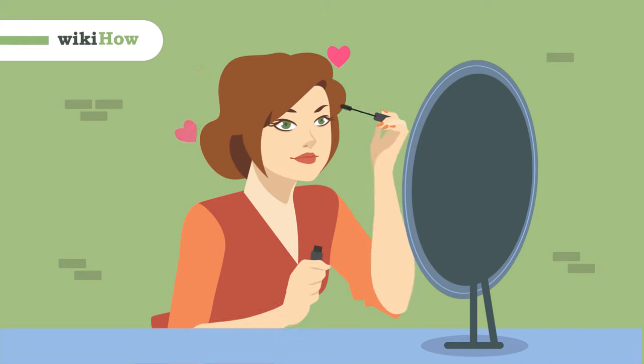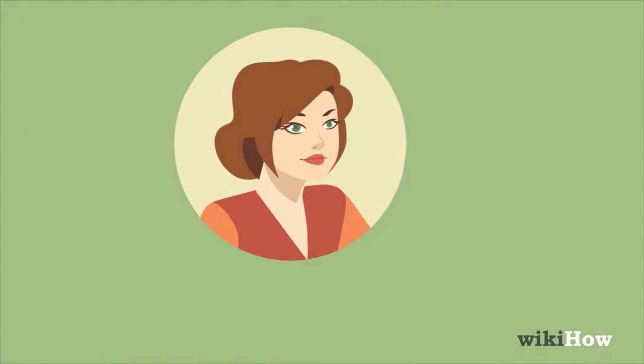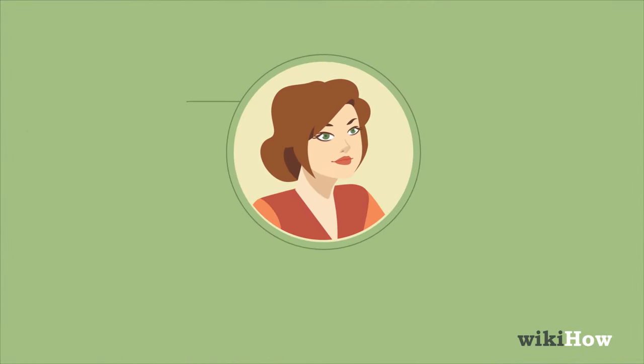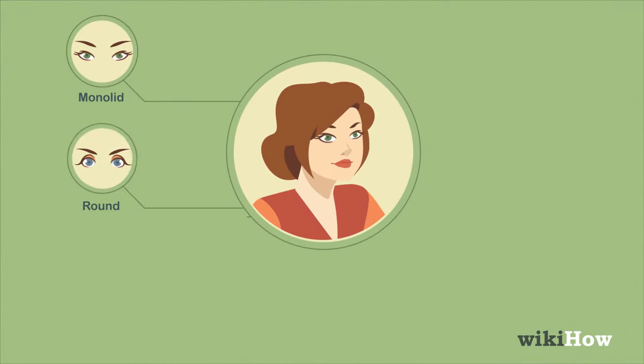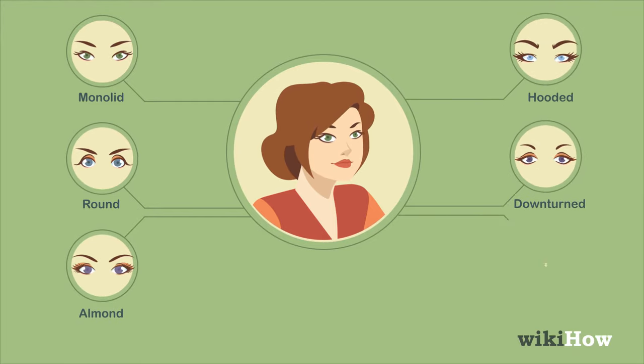Knowing your eye shape can help you choose the best eye makeup looks. There are six main eye types: monolid, round, almond, hooded, downturned, and upturned.